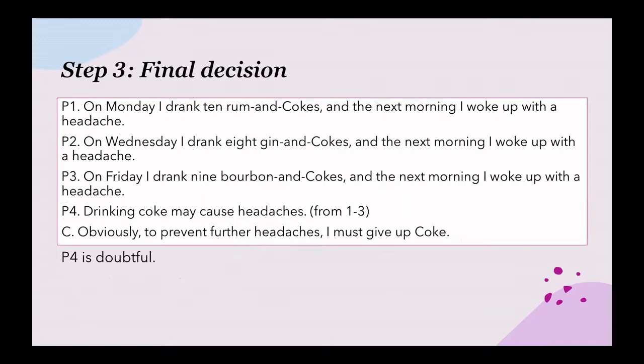When you find that we have good reasons to reject one of the premises, we can point out that one of the premises is doubtful and draw a final conclusion. In this case, because premise four is doubtful, we have no good reason to believe the conclusion, and the whole argument is therefore bad or weak.